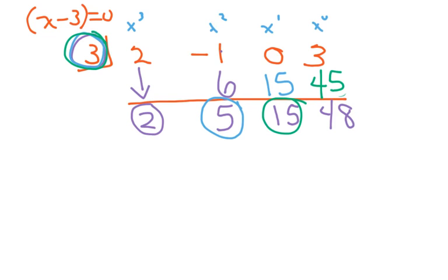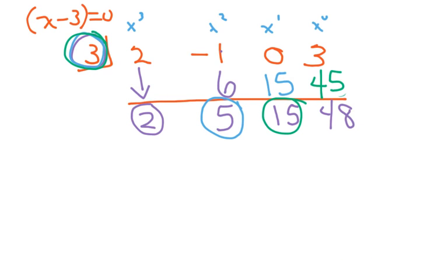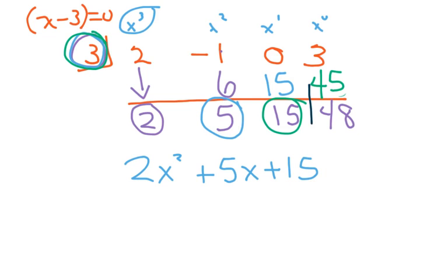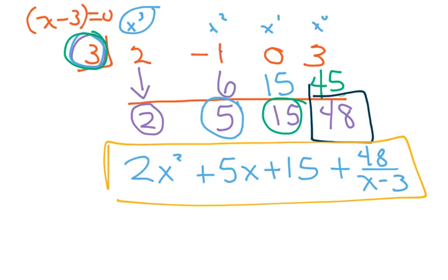When you write this back out, the degree goes down by one. We started with x cubed, so we go down one: this is going to be 2x squared plus 5x plus 15. The last number — I always have students draw a line — is the remainder, so that's plus 48 over x minus 3. And that is your answer. That was a lot faster, and we tend not to make as many mistakes when we do this because we're adding instead of subtracting. So let's try another one.